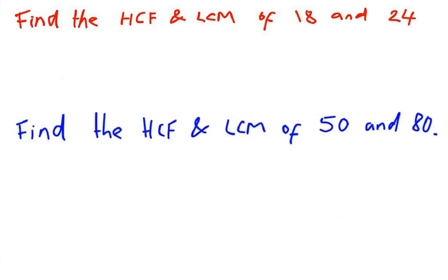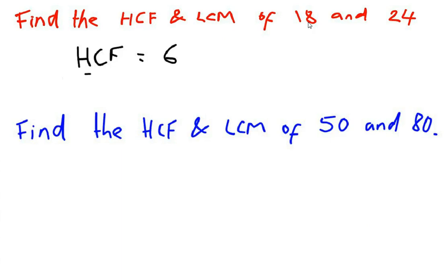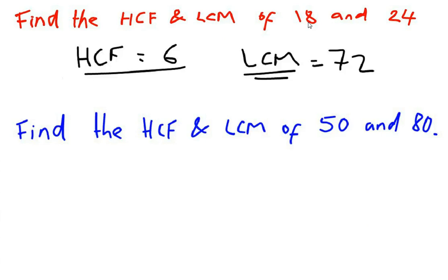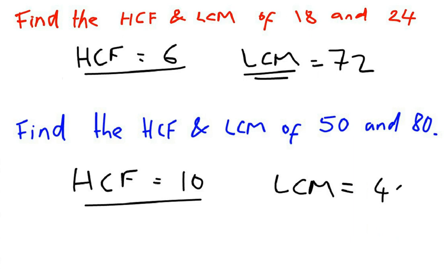I'm going to give you a few questions to try. Pause the video and find the highest common factor and lowest common multiple of 18 and 24, and then do the same for 50 and 80. For 18 and 24: the highest common factor is 6, and the lowest common multiple is 72. For 50 and 80: the highest common factor is 10, and the lowest common multiple is 400. I'll leave it there for today — I hope that video has been useful. If you have any other areas of maths that need work, have a look at the YouTube channel for other videos. Thank you very much and see you later.